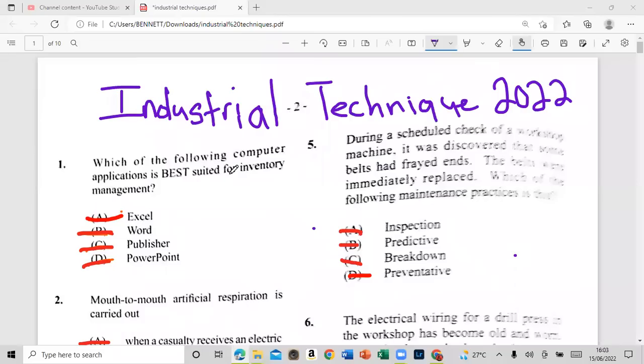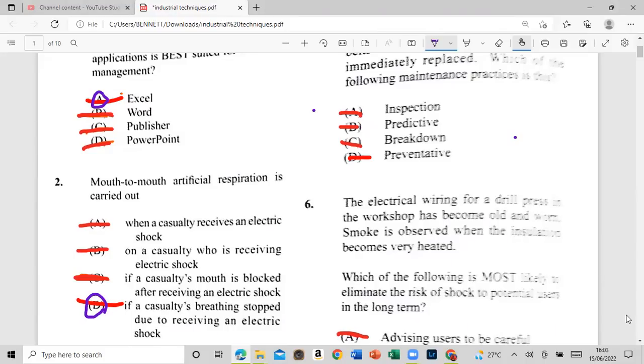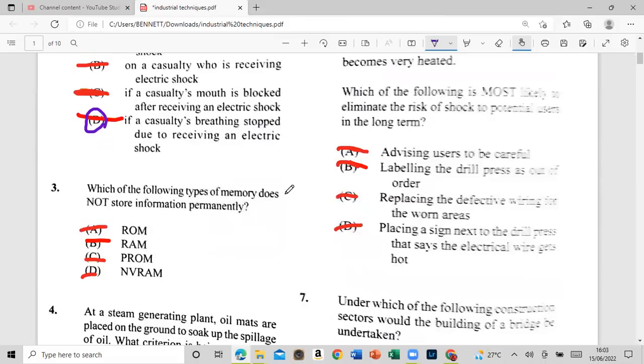All right guys, a paper you're kind of spooky, so let's work with the blues around. We have to follow in computer application. It's a student for inventory management, and that is except. Number two: mouth to mouth artificial respiration is turned out. The causality reading stop due to receiving an electric shock. So that's the example. The following types of memory does not store information permanently if the RAM from the RAM from RD.